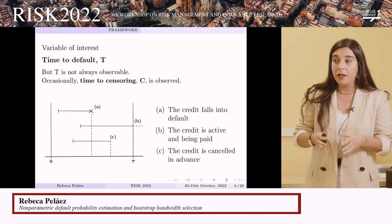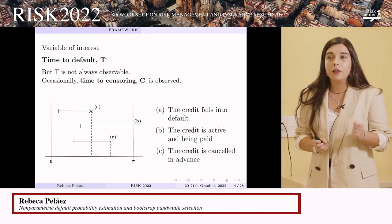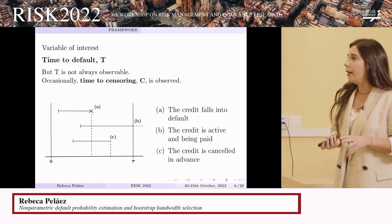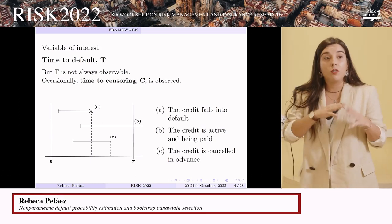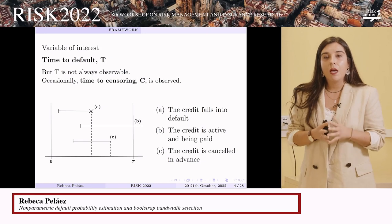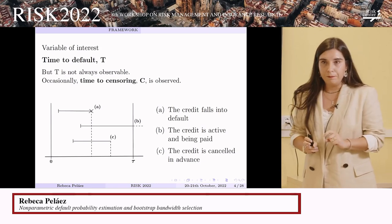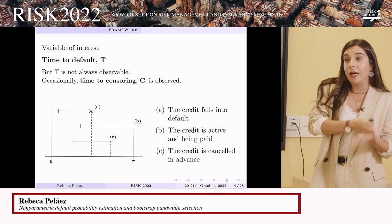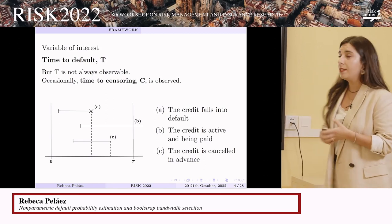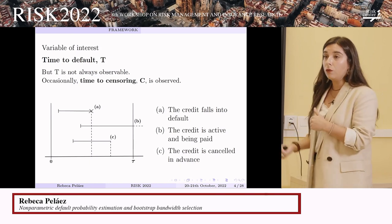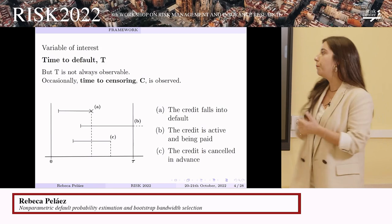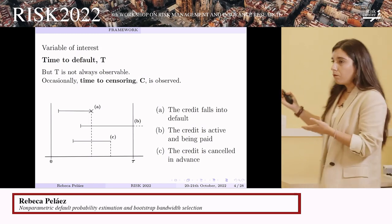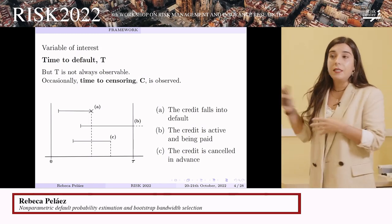If we are interested in estimating the probability of default, it is logical to consider the variable time to default. But this variable is censored — not completely observable. During the observation of a set of credits, we will not see the default for all of them. In situation A the default happens, so we know the time to default. In situation B the study ends without the credit falling into default. In situation C the credit is paid off or cancelled before the end of the study. In both B and C we don't know the time to default — these are censored data.